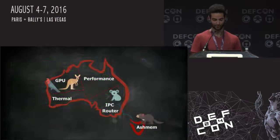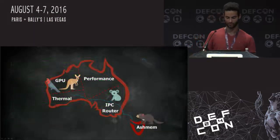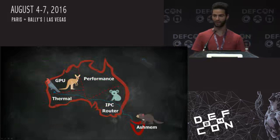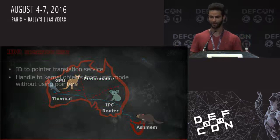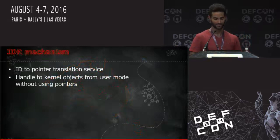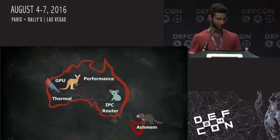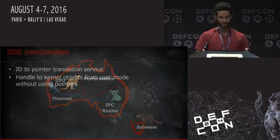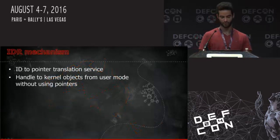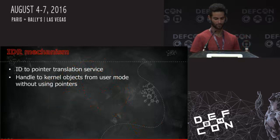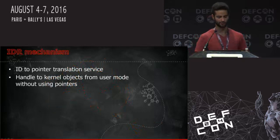That was Quad Root. Now we're going to the last two vulnerabilities: Sinkoka Root and Kanga Root. But before we talk about them, we have to talk a little bit about a mechanism called IDR.